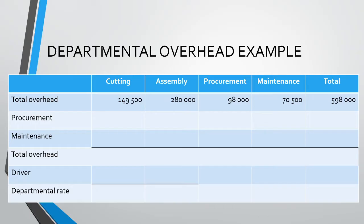In our previous video, we allocated out the overheads to the various departments. If you can't remember how we arrived at those numbers, please go back and watch that video. Our next step is to allocate our service departments — procurement and maintenance — to our production departments of cutting and assembly. For the direct method, remember that we ignore any inter-service allocations. As a result, it does not matter which department we allocate first. For this example, I will allocate procurement first.